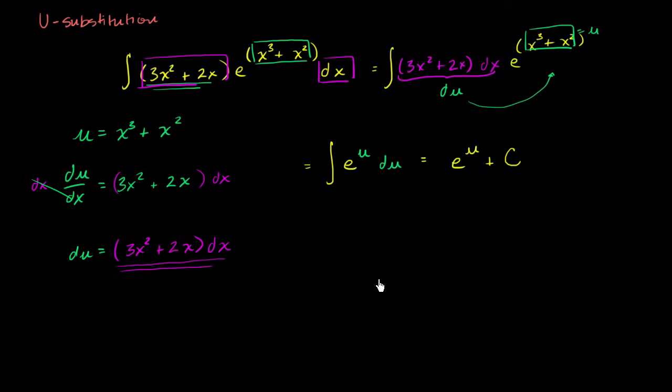And now to get it in terms of x, we just have to unsubstitute the u. We know what u is equal to. So we could say that this is going to be equal to e. Instead of writing u, we could say u is x to the third plus x squared. And then we have our plus c. And we are done.